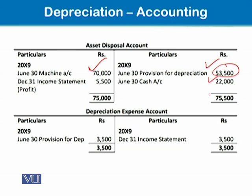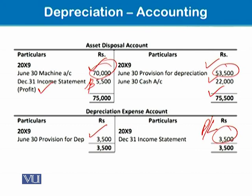By making the total $75,500 on the credit side and $70,000 on the debit side, there is a balancing figure of $5,500, which is our gain, and this will be taken to the profit and loss account. The depreciation expense of $3,500 will also be closed to profit and loss, showing an expense of $3,500 and other income — a profit on disposal of asset — of $5,500.